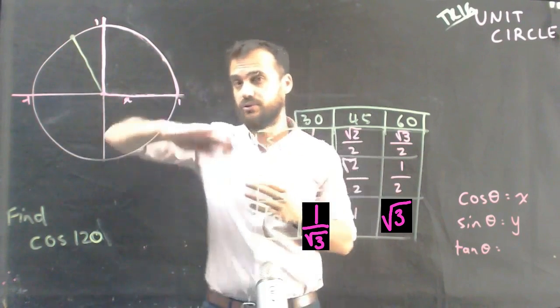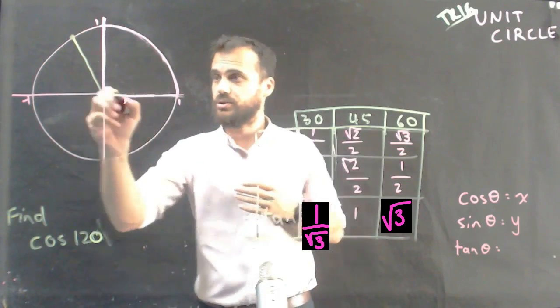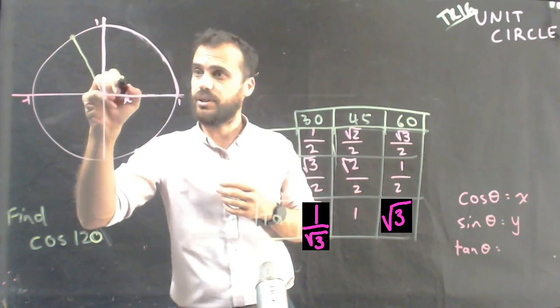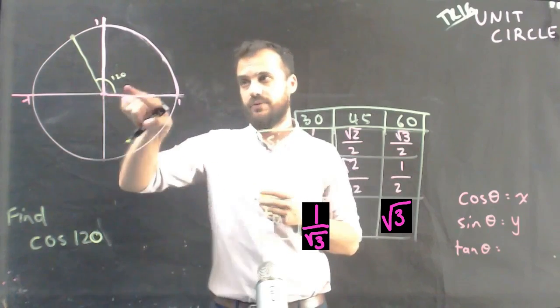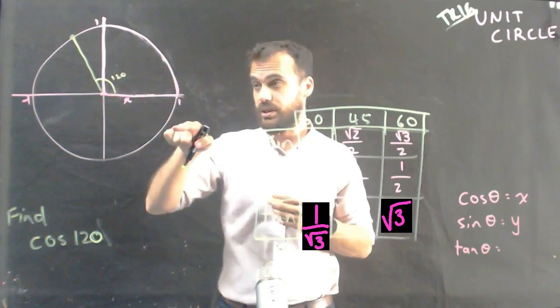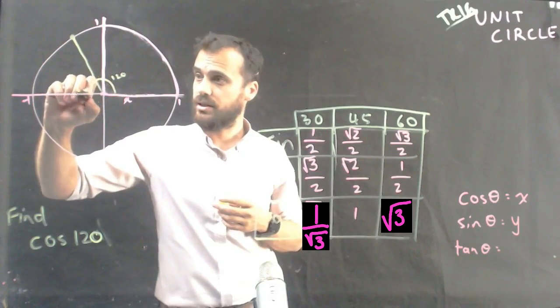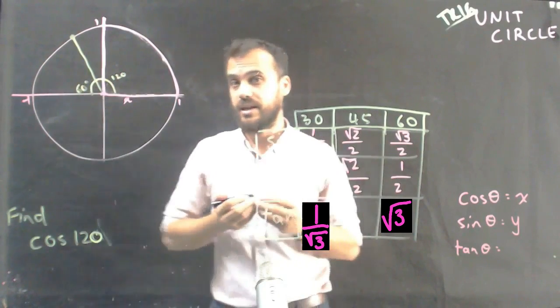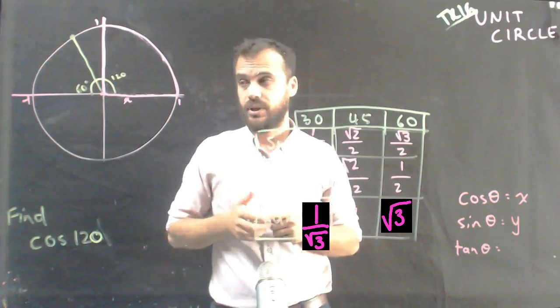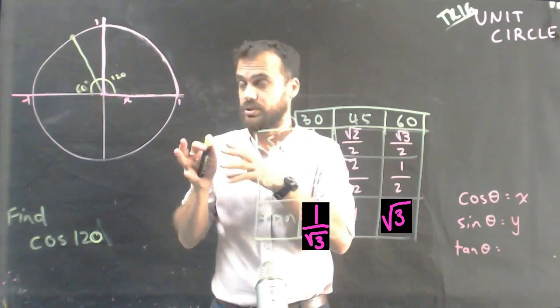Okay, and you can see that I've drawn that line, cosine 120, this is a 120 degree angle. Now, if that's a 120 degree angle, then I can tell you with certainty that this is a 60 degree angle. That's an important concept.